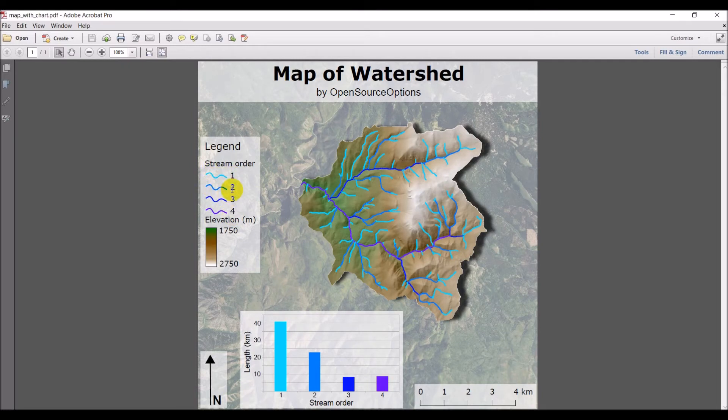for symbology and the legend with these wavy lines and creating a gradient for any color ramp you want. And then we'll use a free program similar to Excel, the Calc program from LibreOffice, to make a chart that shows the length in kilometers of each stream order in this watershed and color code those to correspond to the map.